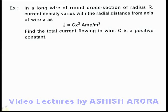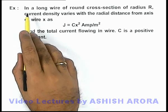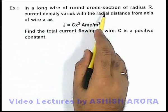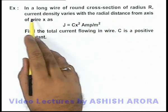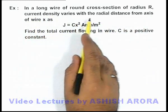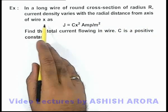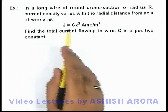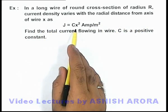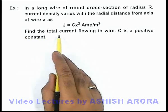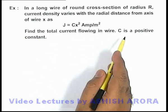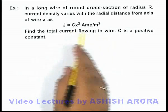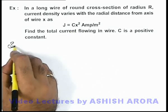In this example, we are given that in a long wire of round cross-section of radius r, the current density varies with the radial distance from the axis of the wire x as j = cx². We are required to find the total current flowing in the wire. It is also given that c is a positive constant.